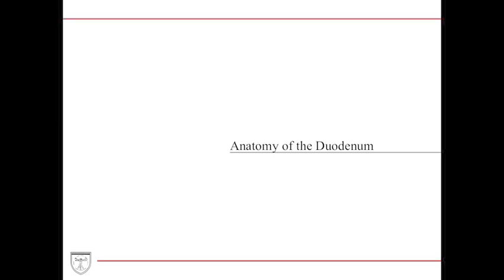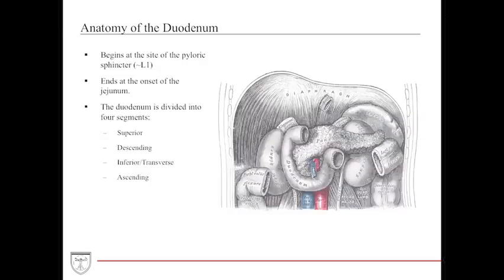The duodenum is a very short segment of the small intestines, C-shaped or hook-shaped, and very intimate with the pancreas. It begins around the L1 vertebral level, ends at the onset of the jejunum, and is divided into four segments: the superior, the descending, the inferior transverse, and the ascending portion.